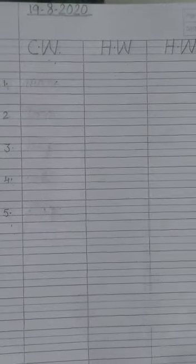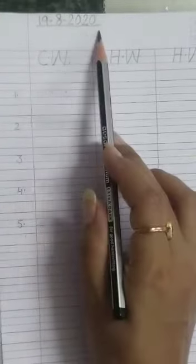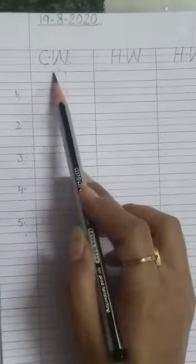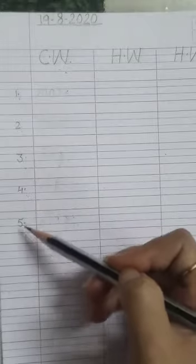Morning dear students, welcome to an English class. Be ready with your English copy number 2. Write date on the top. Today's date is 19th August 2020. Write CW, HW like this. Put numbers 1, 2, 3, 4, and 5.